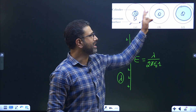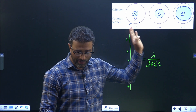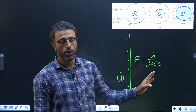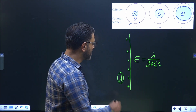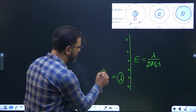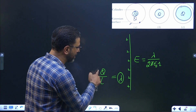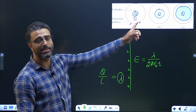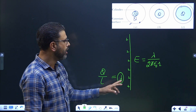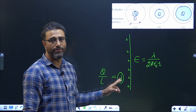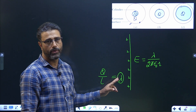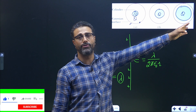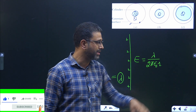All these cylinders have the same charge Q and all of them have the same length L. So charge is same and length is same. Remember, lambda is charge per unit length — charge is the same for all three, L is the same for all three, so lambda is the same for all three cylinders.